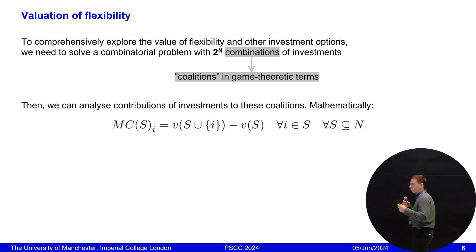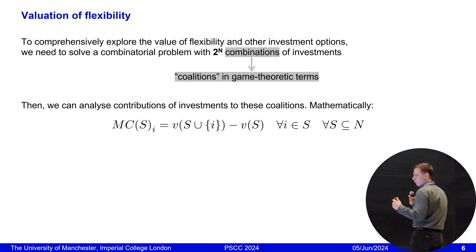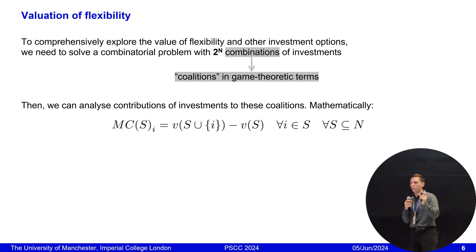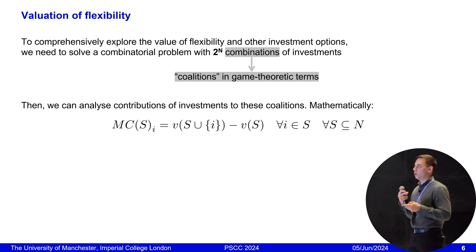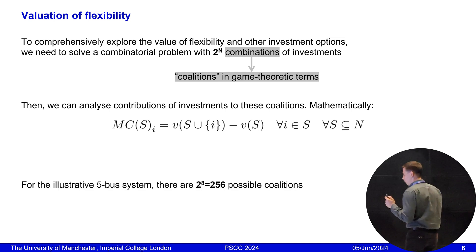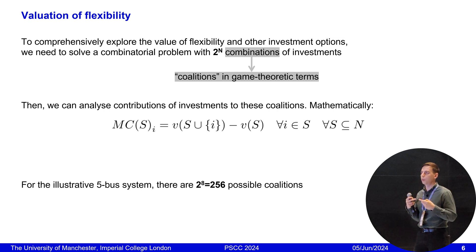If we formulate this problem like this, we can analyze contributions of investment options to our objectives. Mathematically, what we do in the paper is calculate MC — the marginal contribution to coalition S by player i. It's a very simple formula: the difference between the coalition with player i minus the coalition without player i. If we do this for all possible coalitions and all investment options, we can understand the value of these investments. The only problem is that even for this simple case, we have to solve our planning problem 2 to the power of 8 times, which is computationally challenging. But for the sake of illustrating this concept, we did it.